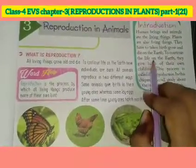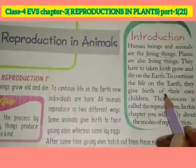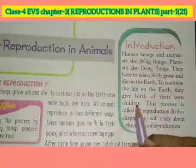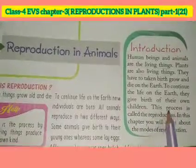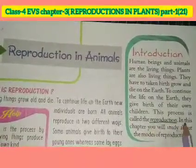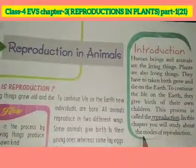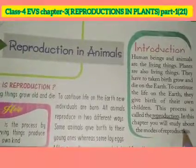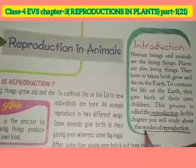To continue the life on the earth, यह process continue earth पर चलती रहती है। They give birth to their own children — उसी प्रकार यह अपने जैसे और children को जन्म देते हैं। This process is called reproduction — उस process को Reproduction बोलते हैं। In this chapter, you will study about the modes of reproduction — reproduction के modes क्या क्या हैं।